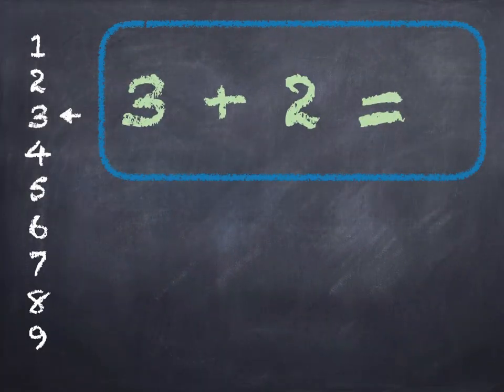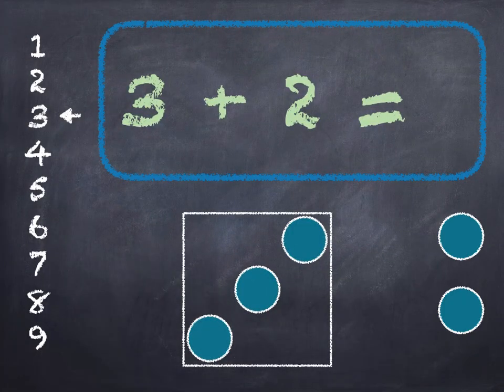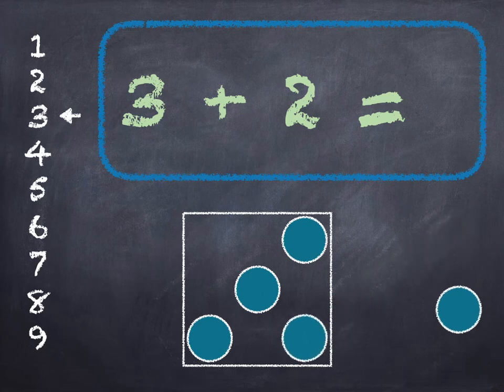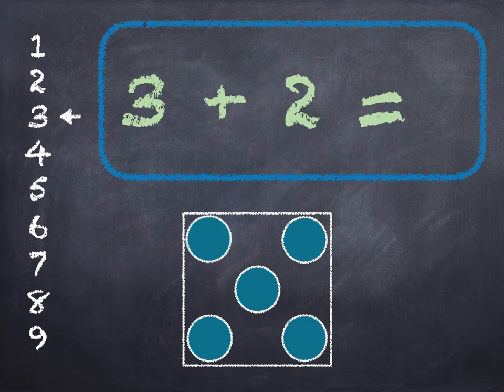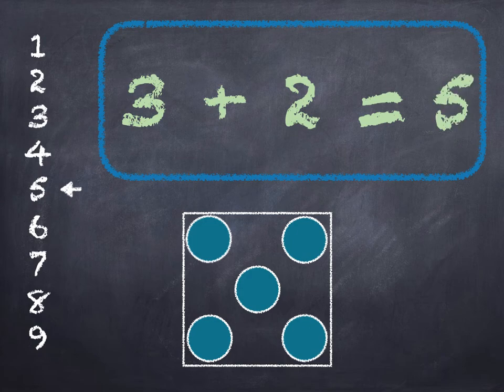3 plus 2. 3 in the box, add 2 on. 3, 4, 5. Start at 3 on the number line and go down 2. 1, 2 and we get to 5. 3 plus 2 is 5.